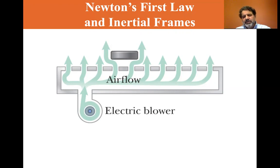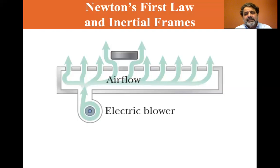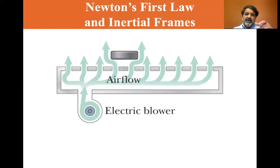And once the train reaches a constant velocity, the puck will appear to be stationary, because it's traveling at the same speed that the train is. Now, if the train were to suddenly stop, the acceleration is negative — if it's headed in this direction and stopping, the acceleration goes this way, and the puck would appear to go forward.